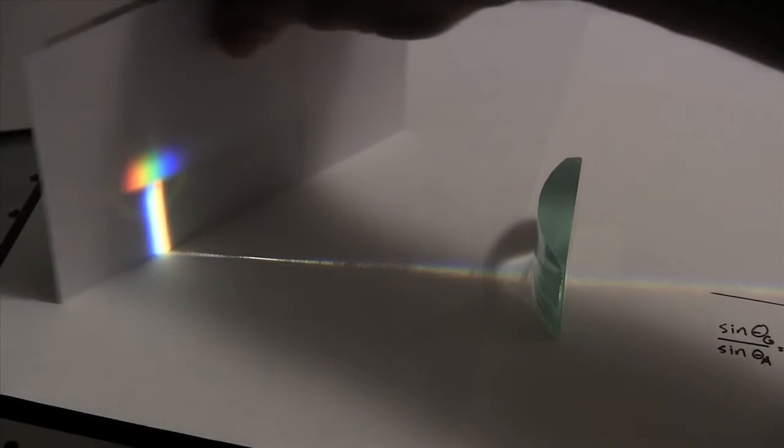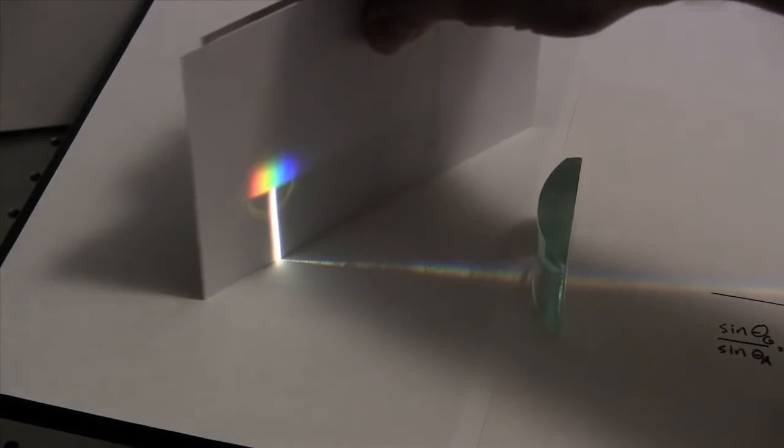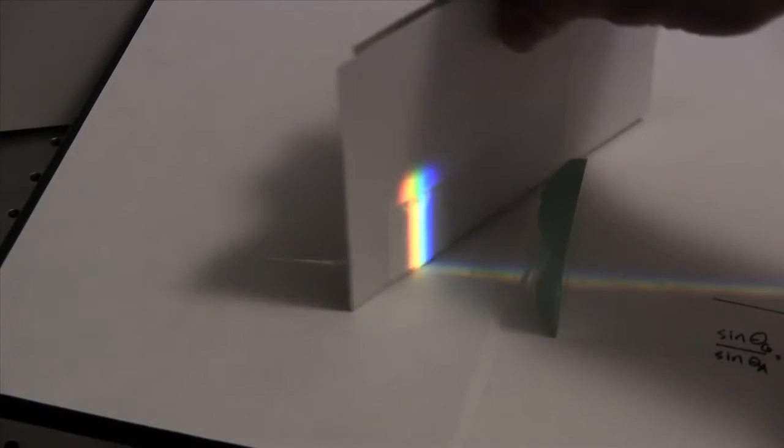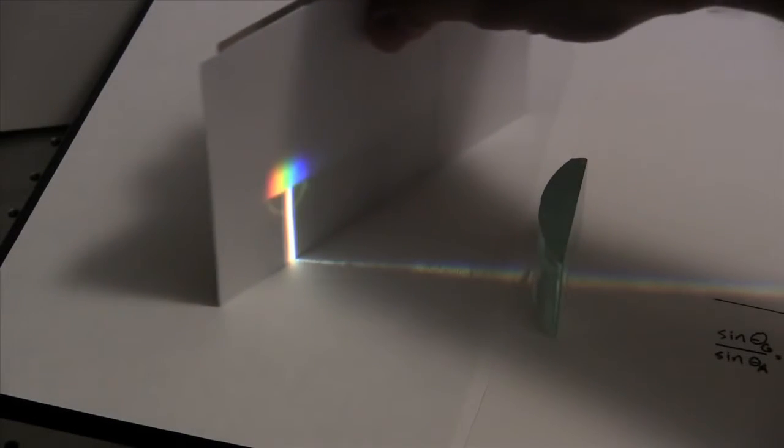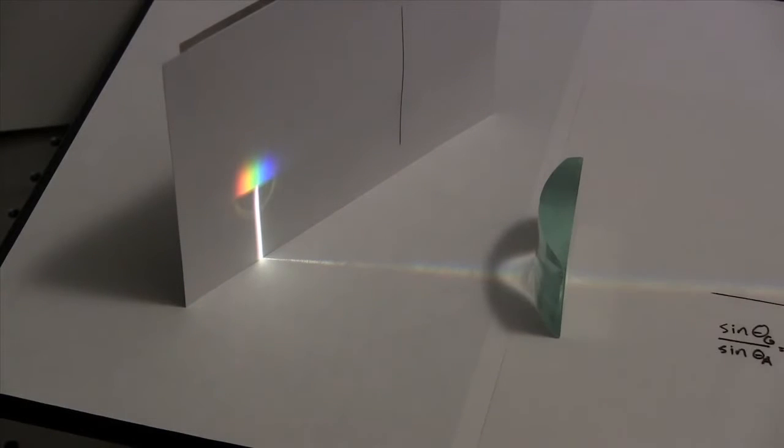As we move the screen in this experiment, there's nothing to cause this change of color that we're observing. The only thing that's changing is the overlap of the colors. So we can conclude that when we perceive this white light, what we're really seeing is a whole bunch of colors added together.